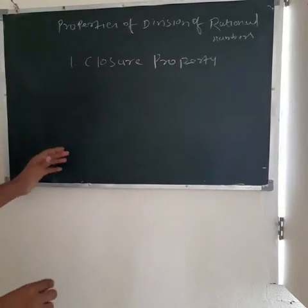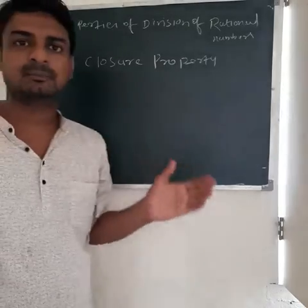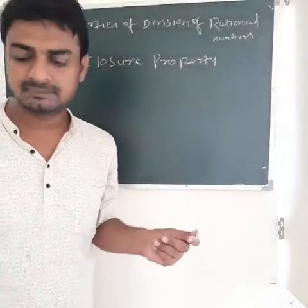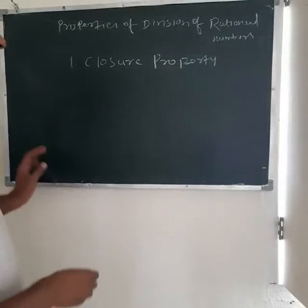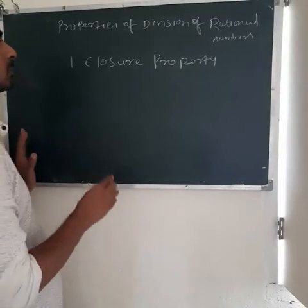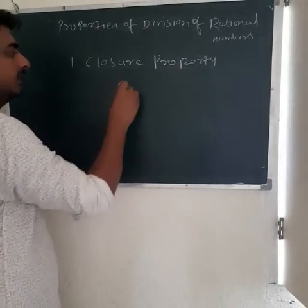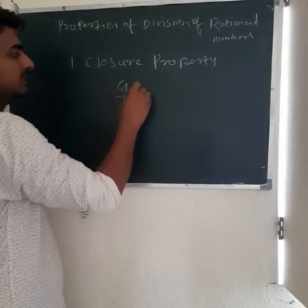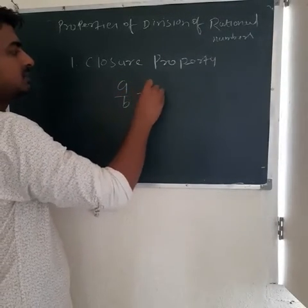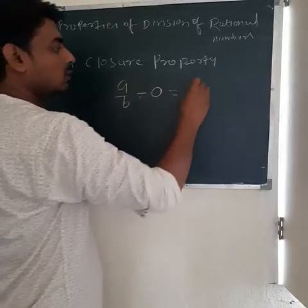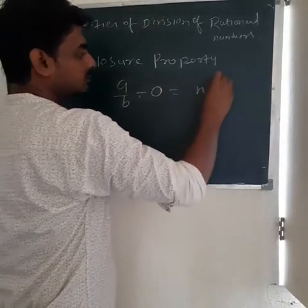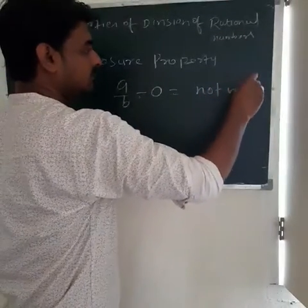Any set of rational numbers is not closed under the division property. A upon B divided by 0 is not valid. So in case of division, the closure property does not follow.